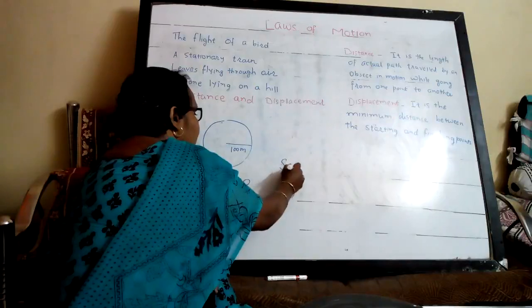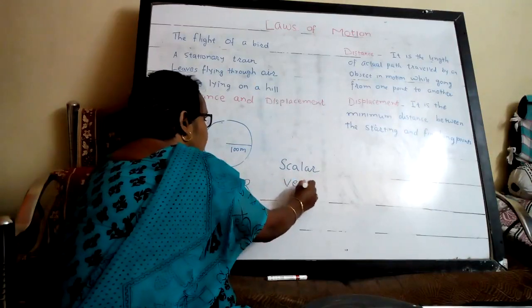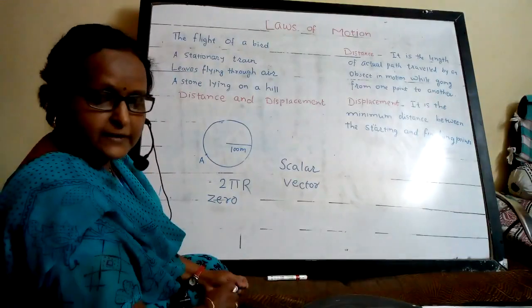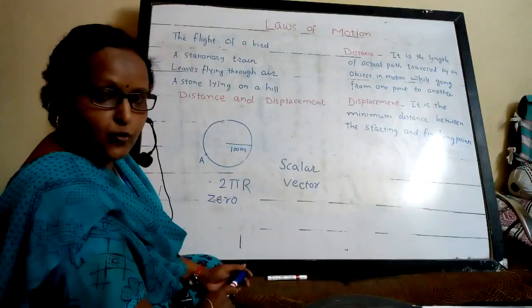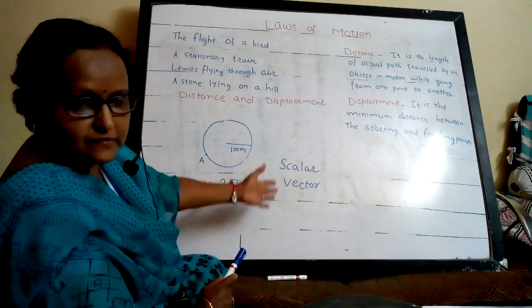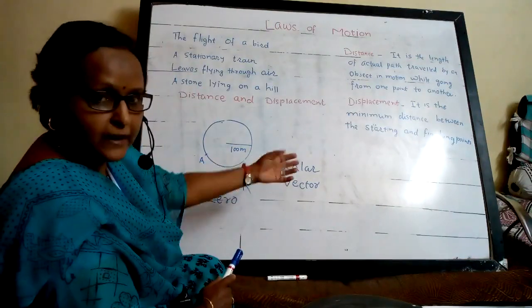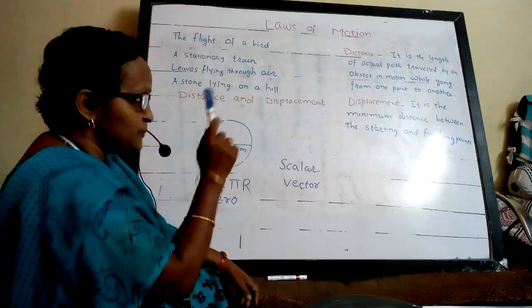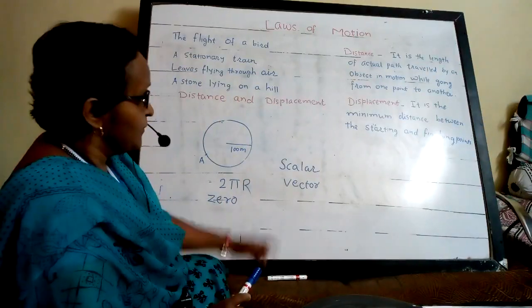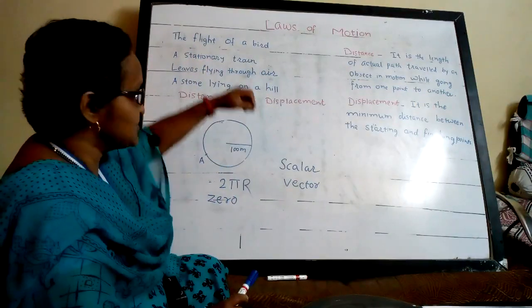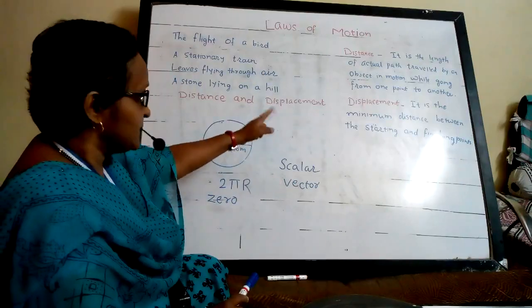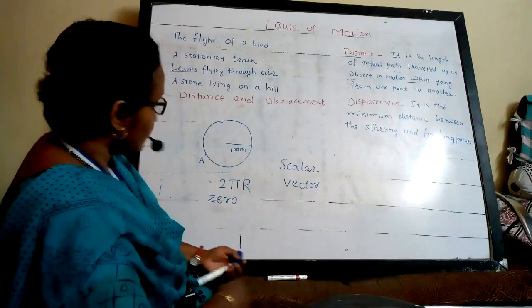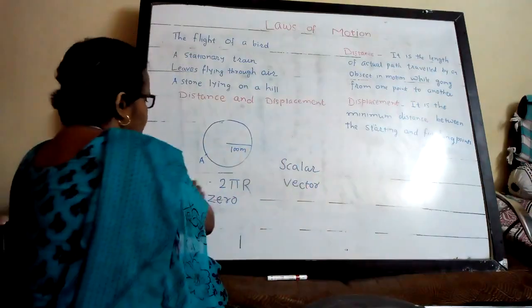Distance and displacement are scalar and vector quantities, which we studied last year. A scalar quantity requires only magnitude to express it, while a vector quantity requires both magnitude and direction. When we speak of displacement, direction is necessary; when we speak of distance, only the magnitude — the length of path covered — matters. So distance is a scalar quantity and displacement is a vector quantity.